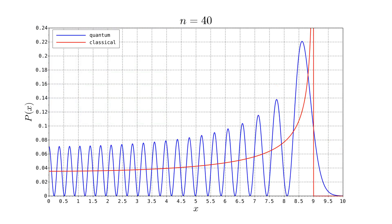Here's a plot of these probability distributions for n equals forty. The corresponding classical amplitude is nine. We only plot positive x values; for negative x values, the plot is simply the mirror image of this. The quantum probability oscillates about the classical probability, except near the classical displacement limit.